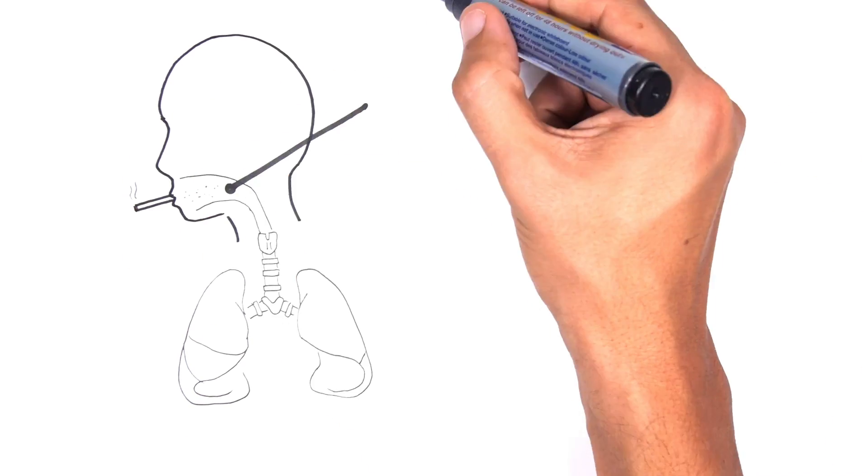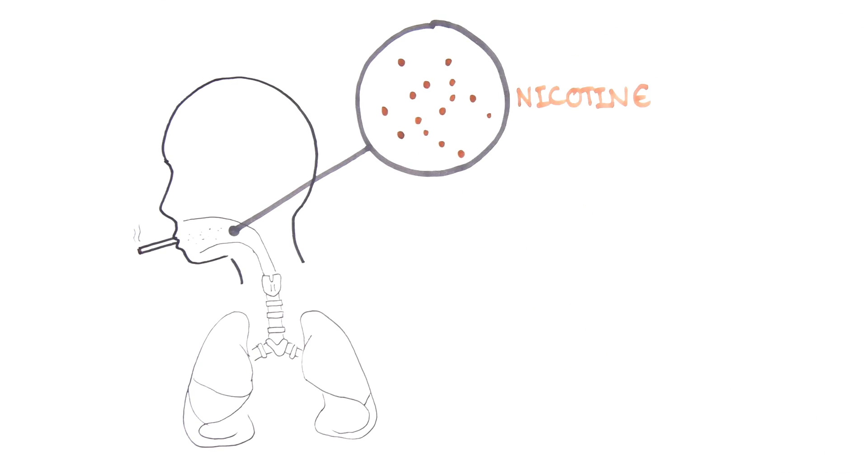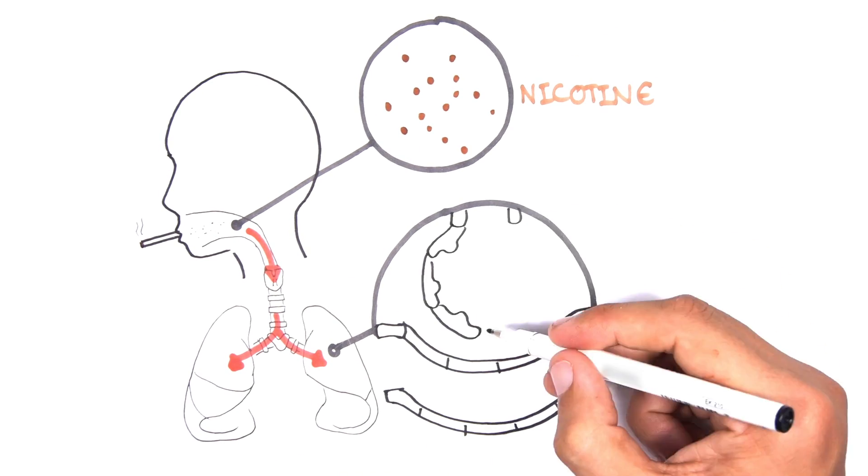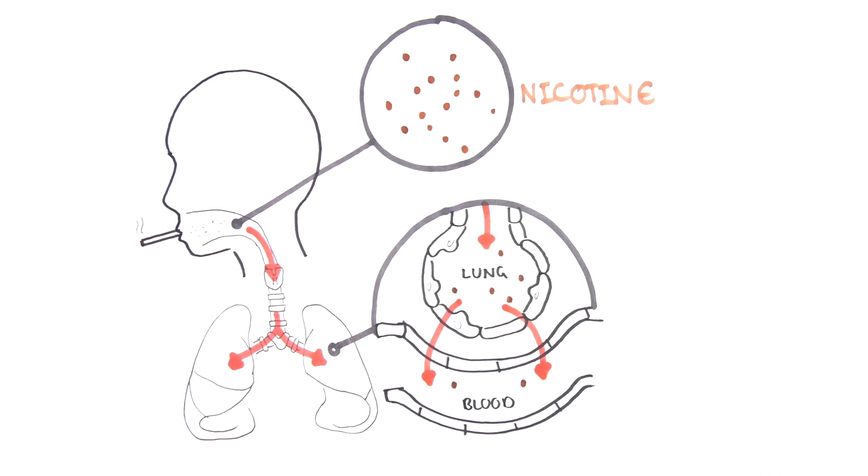Ever wondered what happens in your brain when you smoke a cigarette? Nicotine is an addictive drug that actually changes your brain. That's what can make quitting so hard.